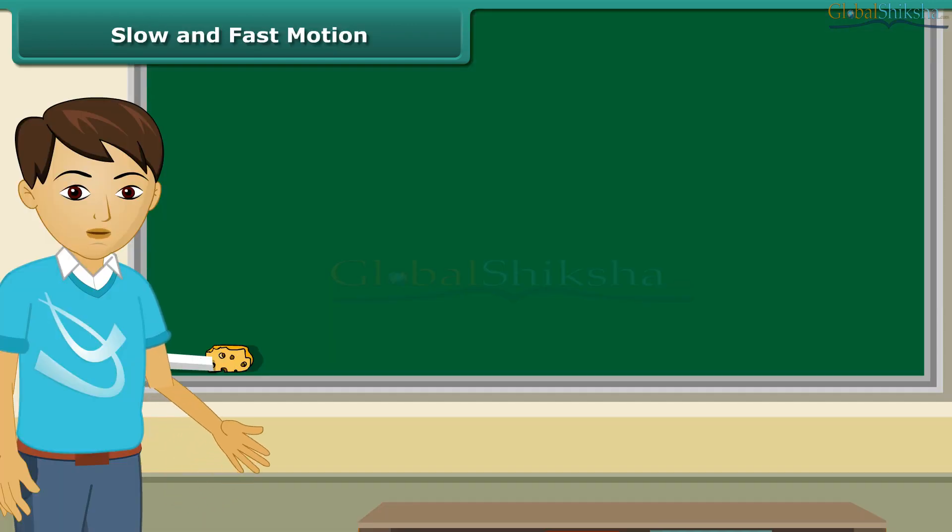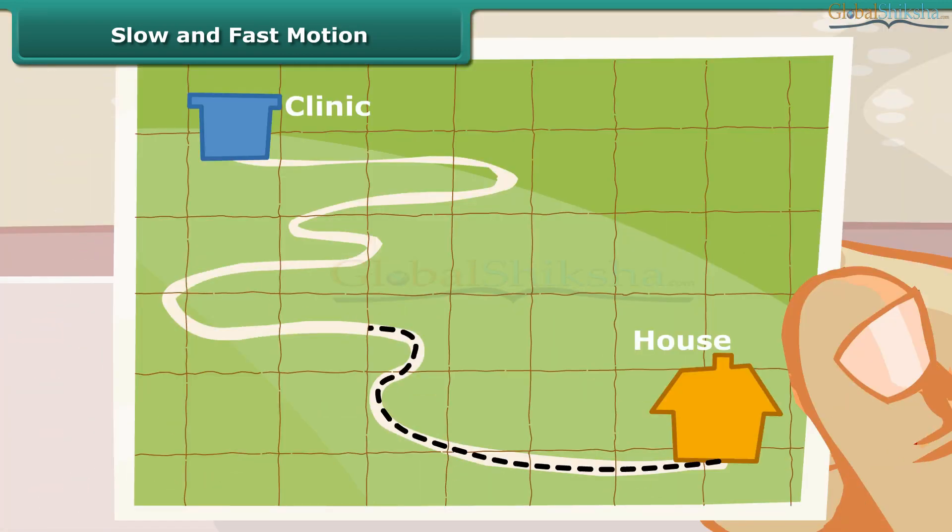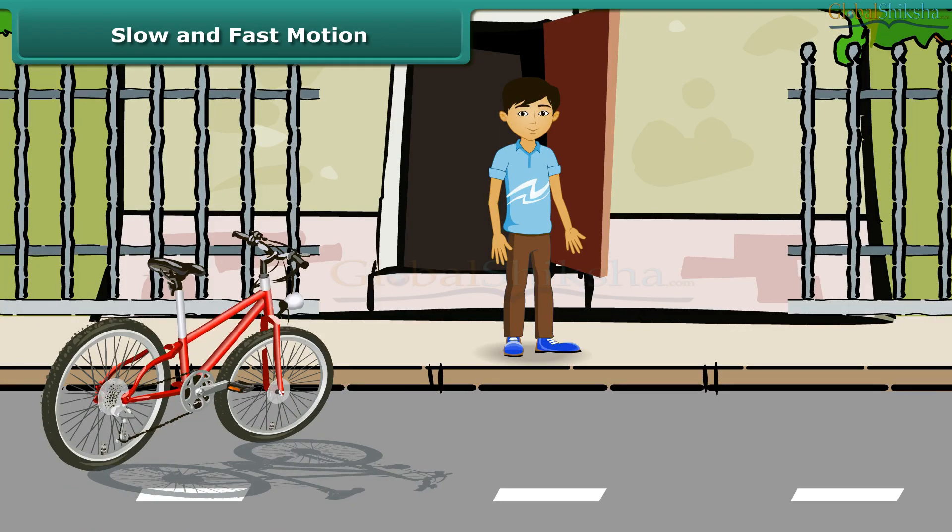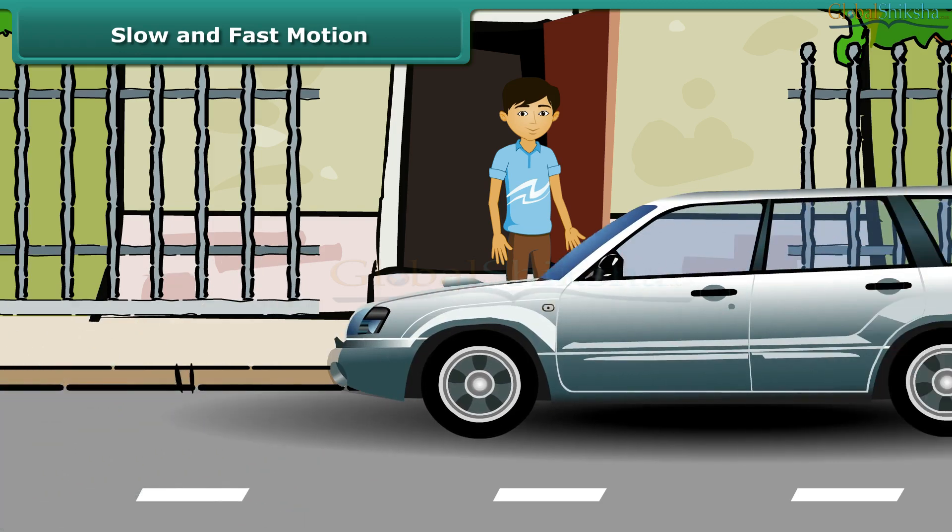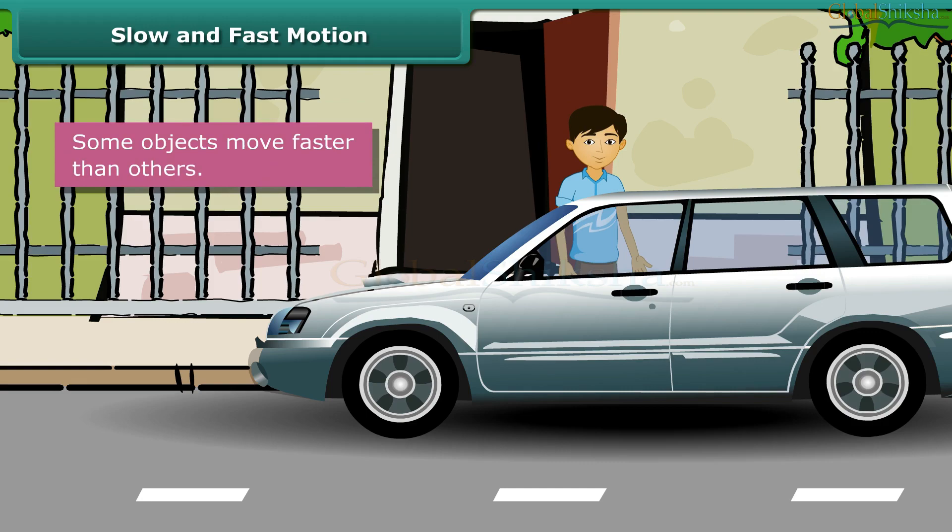Suppose you have an appointment with your doctor at 5 in the evening. It is already 4:30 pm and the doctor's clinic is 5 km away from your house. You have the choice of either cycling down or taking a taxi to the clinic. What will you do? Correct. You will take a taxi because a taxi is faster than a cycle. So we can say that some objects move faster than others.